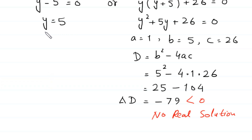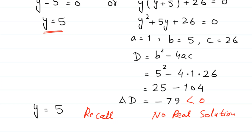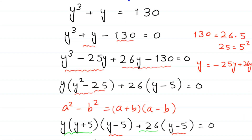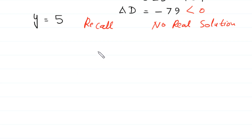So we select the value y equals 5. Recall that we supposed 2 to the power x is equal to y. We put the value of y, which is 5, into this equation: 2 to the power x is equal to 5.